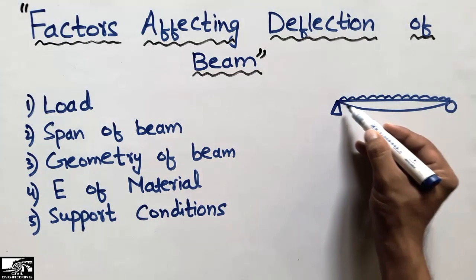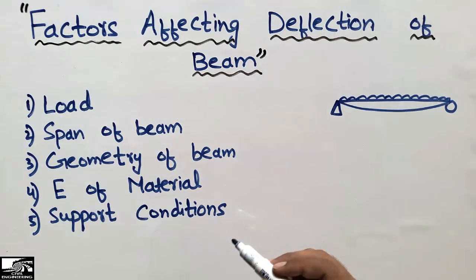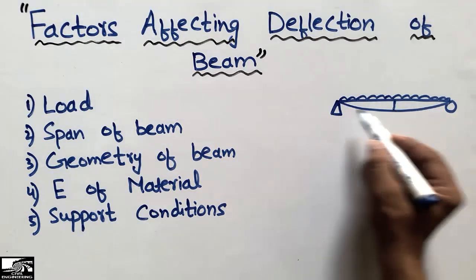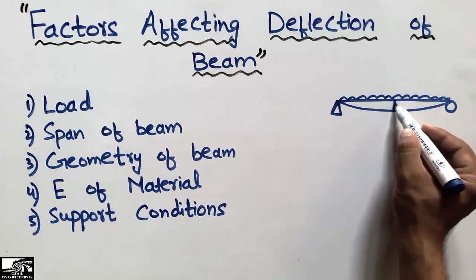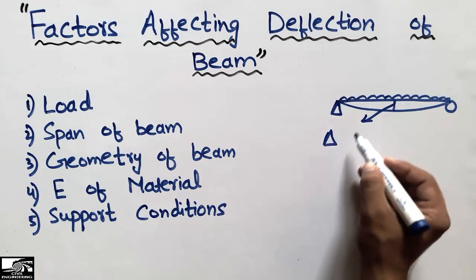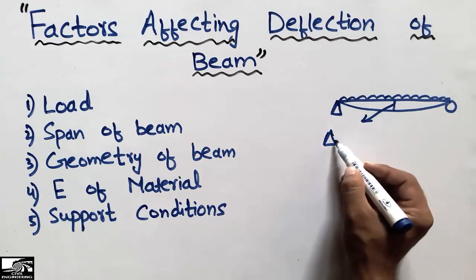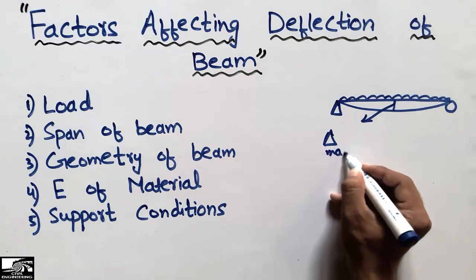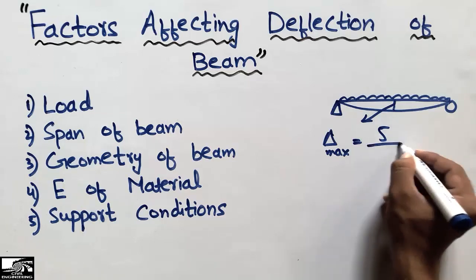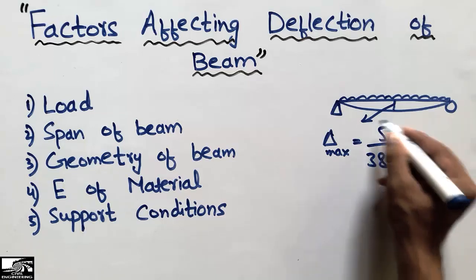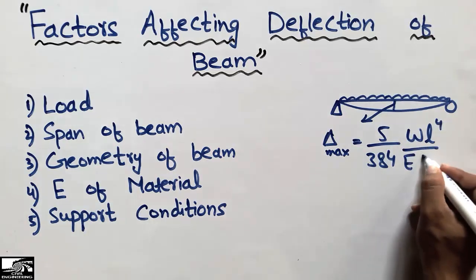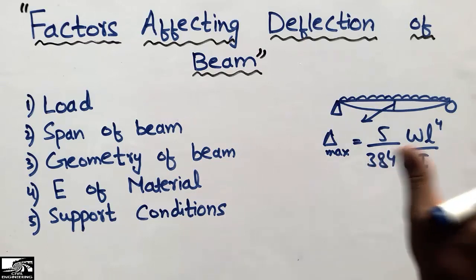The maximum deflection of this beam will be at the mid-span, because it is simply supported, so the mid deflection will be maximum. This deflection is represented by Delta (Δ), which will be maximum at the center of the simply supported beam. The formula is 5/384 × WL⁴ divided by EI.